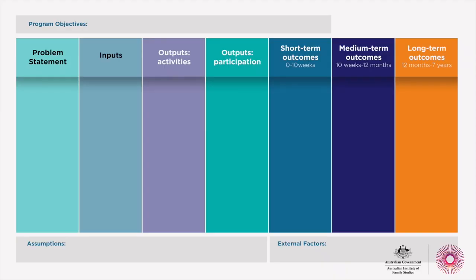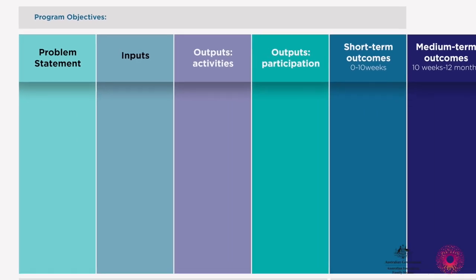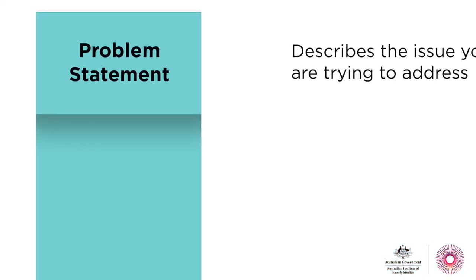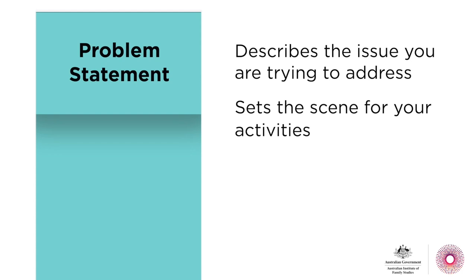Let's start with the problem statement — always do this first, no matter how you choose to complete your logic model. The problem statement describes the issue you're trying to address: why are you delivering this program and what need is it intended to meet? It really sets the scene for your program activities. If you've done a needs assessment, this will inform your problem statement. If you haven't, you'll need to do some research and thinking about the underlying causes of the issue, who experiences it and how they experience it.